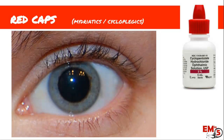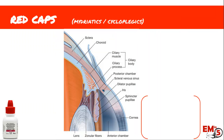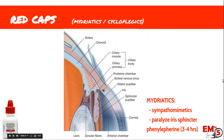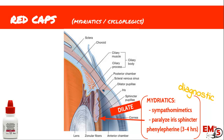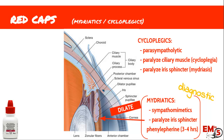Next up is the red caps. These are the mydriatics and the cycloplegics — basically they're going to dilate the eye. The red caps dilate the eye. The mydriatics are sympathomimetics; they paralyze the iris sphincter, which causes the eye to dilate. One common one we use is phenylephrine, which lasts about 3 to 4 hours. We might not actually use these in the ER too often — they're more for diagnostic use in the clinic. The ones we're going to be using and prescribing in the ER are more the cycloplegics.